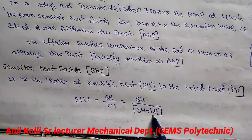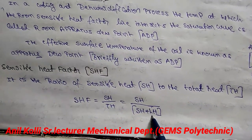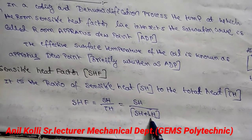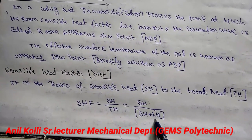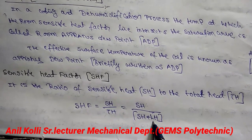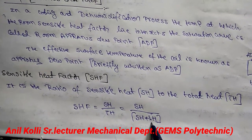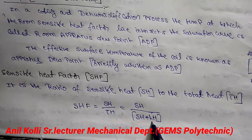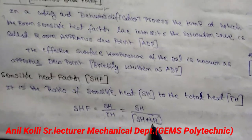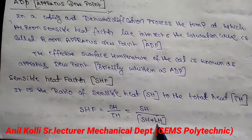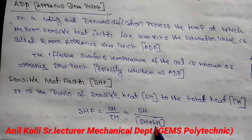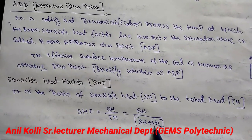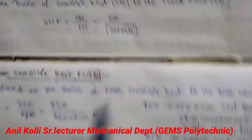Suppose temperature is 30 degrees and reduces to 20 degrees — that is sensible heat. What is latent heat? It is a phase change. For example, ice can convert to water, and water can convert to vapor. This phase change is called latent heat — we have already studied this in thermal engineering. So this is sensible heat factor.